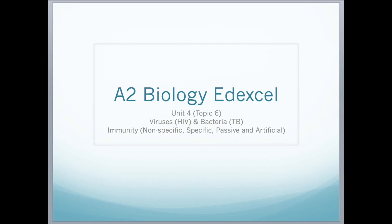In this video, I will be looking at Unit 4, Topic 6 of A2 Biology at Excel. I will be looking at viruses, bacteria, and at non-specific, specific, passive and artificial immunity.